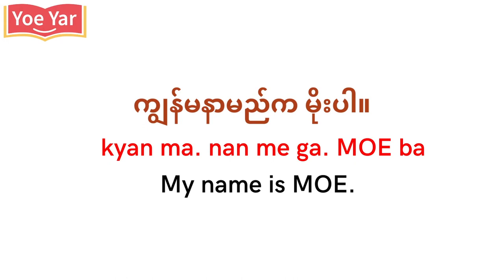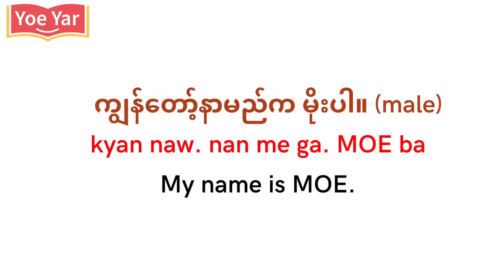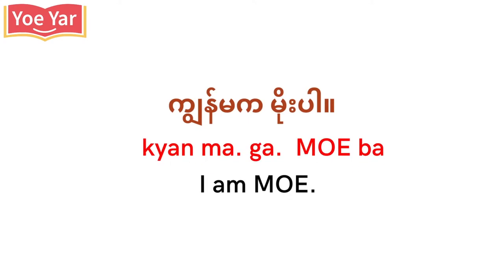Let's begin with the name. 'Jama nameka moba.' If you are male, you can use 'Jana nameka moba.' This is the formal way to say your name. Another way of saying your name is 'Jama ga moba.' This form is generally used among friends.